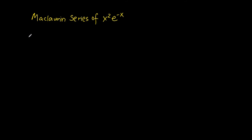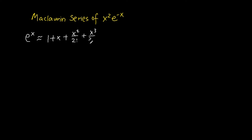To tackle this problem, the first step is to find the Maclaurin series of e to the power of x. Note that we are going to express the Maclaurin series of x squared e to the power of negative x up to and including the x to the power of 4 terms, so the same goes for e to the power of x. So e to the power of x is approximated to be 1 plus x plus x squared over 2 factorial plus x cubed over 3 factorial plus x to the power of 4 over 4 factorial.